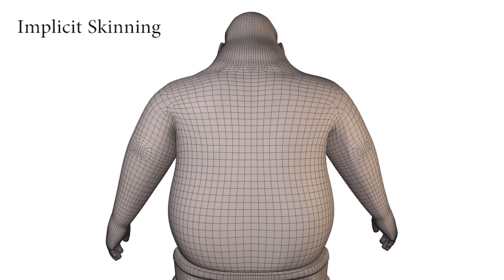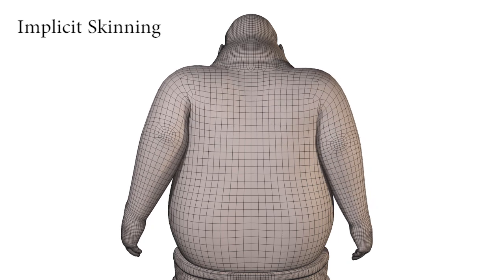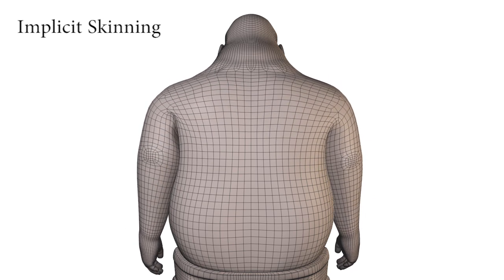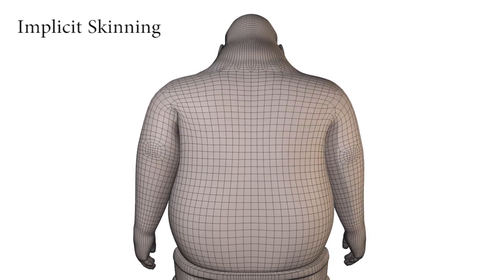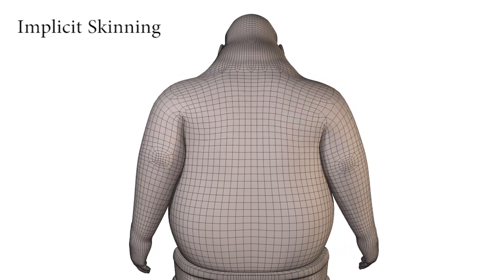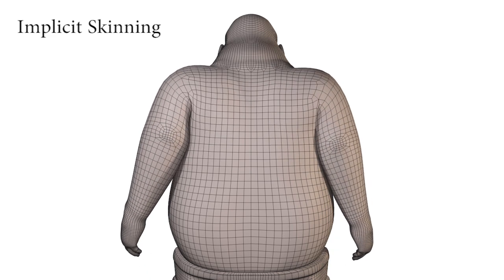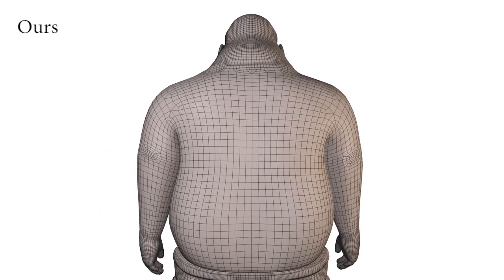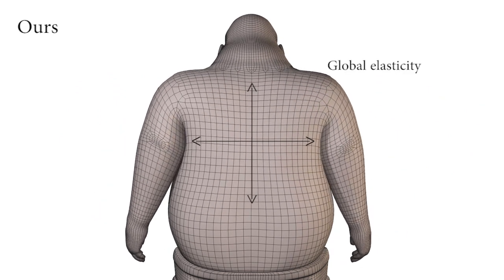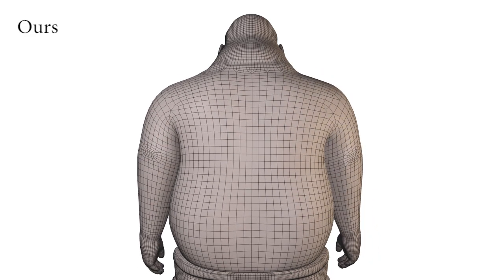Next, implicit skinning performs skin contacts but is unable to correct the skin crease at the shoulders. In addition, the effect of skin elasticity is limited and only visible in the upper part of the back. Our method avoids the crease and produces the effect of global skin elasticity. Notice how the skin moves in the lower part of the back.